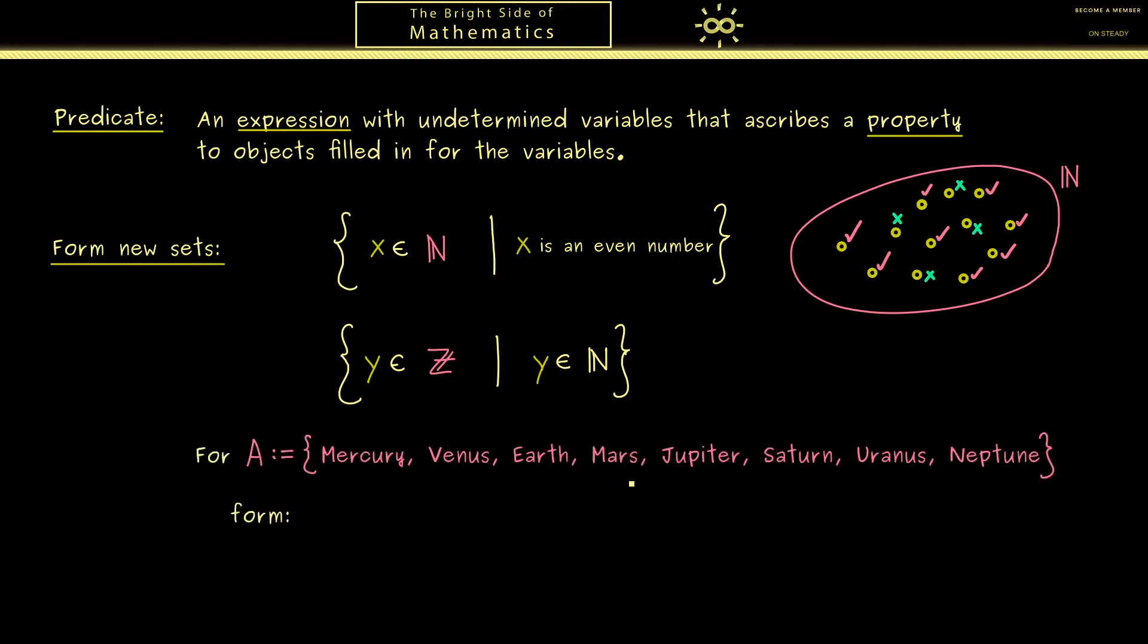For the sake of visualization, let's consider a non-mathematical example. Here we have the set A of the 8 known planets of the solar system. For this let's form the set of all planets p such that p has at least one confirmed moon. So everything works, we get out a new set and you can check for yourself all the elements of the set.